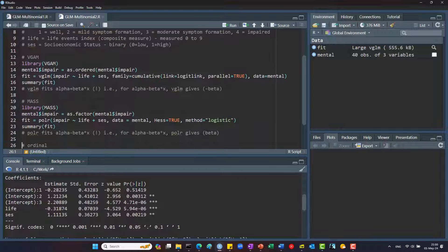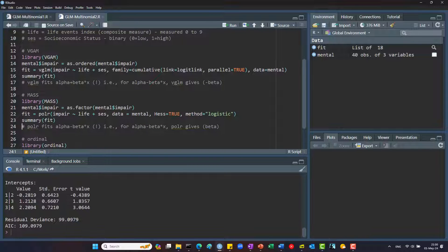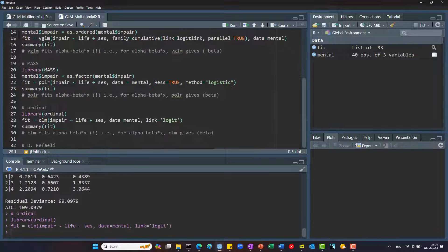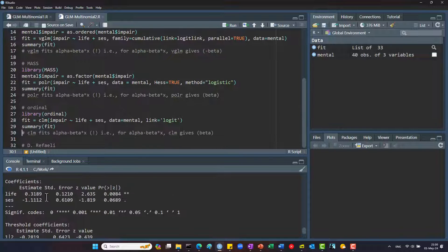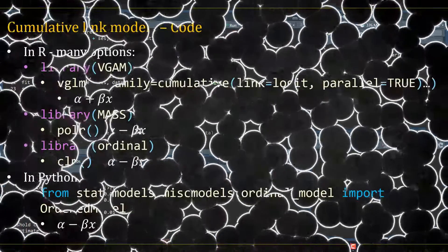Also we get the two coefficients for the predictors. If we use the polr function or the clm functions, we have to set the y to be a factor. Here are the results for each. We see that we get more or less the same intercepts, but that the betas switch signs. Again, this is because they model alpha minus beta x.